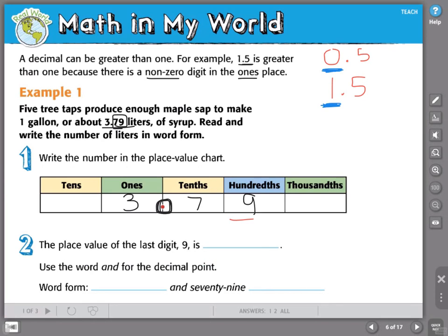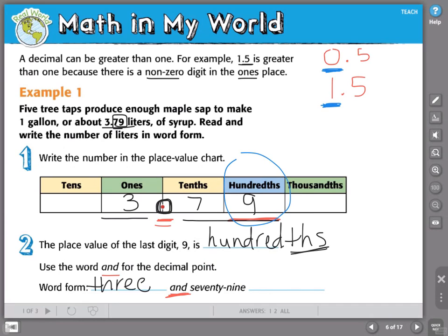Now, we need to pay close attention to the digit in the last place. The place value of the last digit, 9, is the hundredths. Don't forget your THS. We're going to use the word AND to read our decimal point. So, to write the word form, first, we name our whole number. Our whole number is three. Then we say AND to represent our decimal point. Now, we're going to read our decimal numbers and name the last place value. So, we have three and seventy-nine. Seventy-nine what? Seventy-nine hundredths.